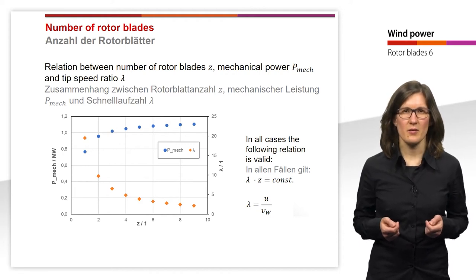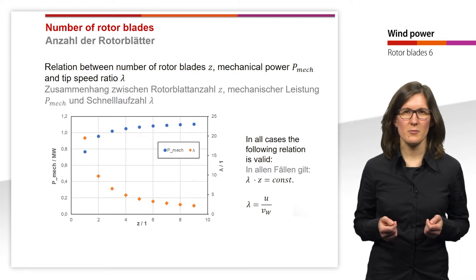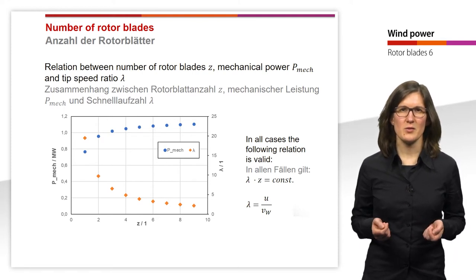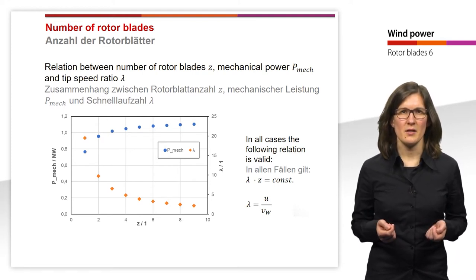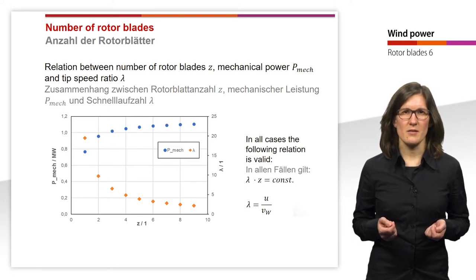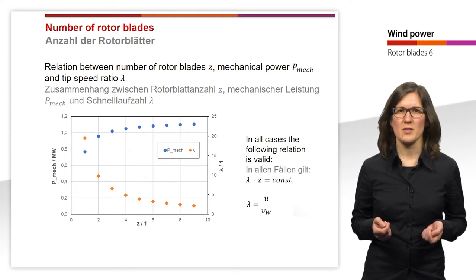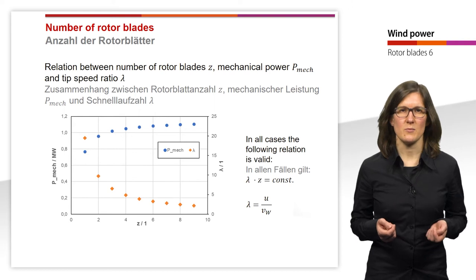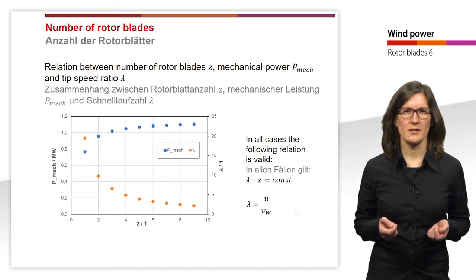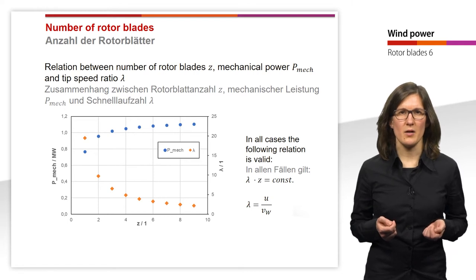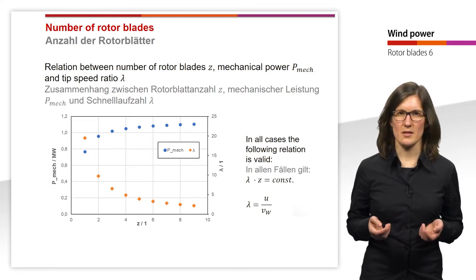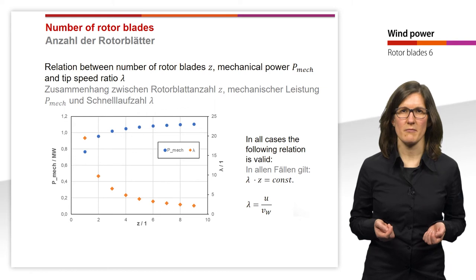The number of rotor blades z is shown on the left y-axis and the tip speed ratio lambda on the right y-axis. It is visible that the mechanical power increases with increasing number of rotor blades, but the tip speed ratio decreases with increasing number of rotor blades. The tip speed ratio multiplied by the number of rotor blades is constant in all cases shown in the graph.